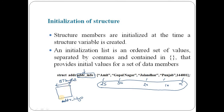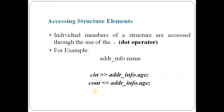So 87 bytes total is allocated for the variable ADDRINFO, and the address of this allocated block is stored in this variable. At this memory location all these values are stored — AMIT is stored here, Gopal Nagar is stored here, Jalandhar is stored here. This is how we can store all the values in a structure using the initializer list.